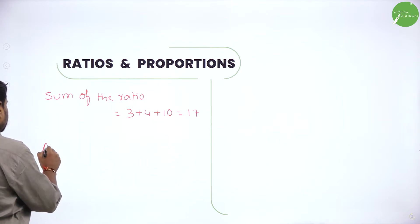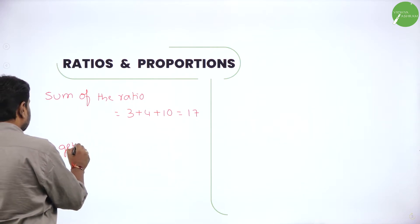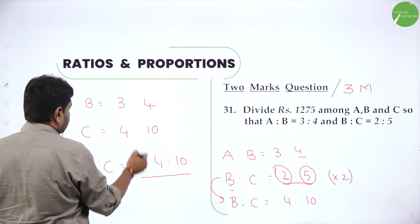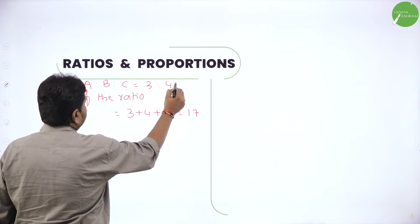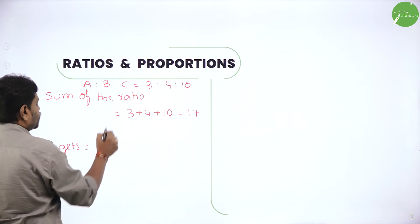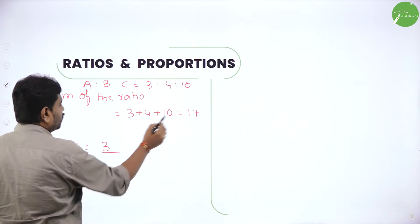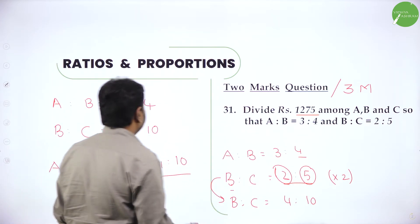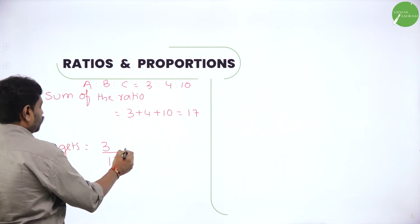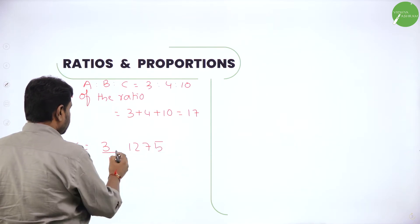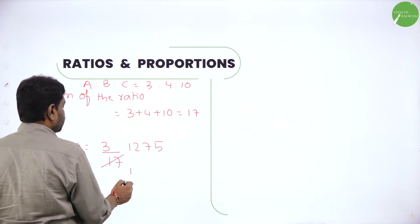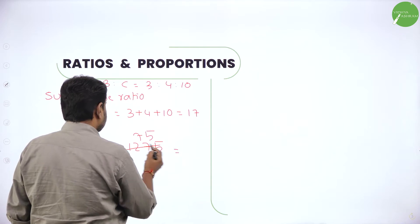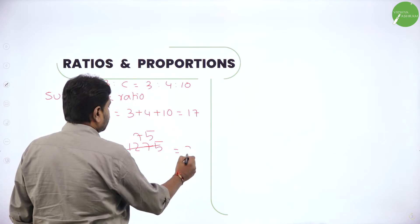So now A gets — what is the ratio of A? A is to B is to C, we got 3 is to 4 is to 10. A gets 3 by 17 into total amount. You have to divide ₹1,275. So A gets 3 by 17 into 1,275. Simplify: 17 ones are 17, 7 is remainder — 75. So 75 into 3 will become 225.